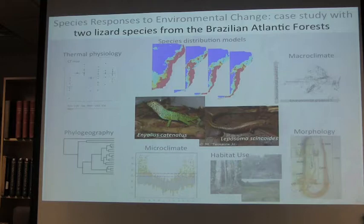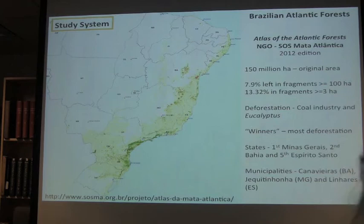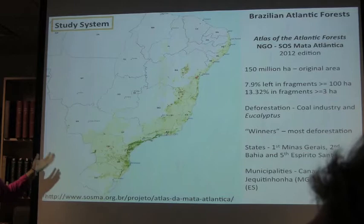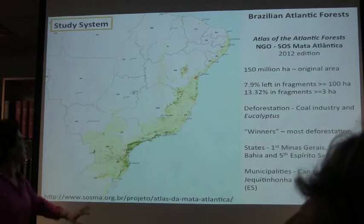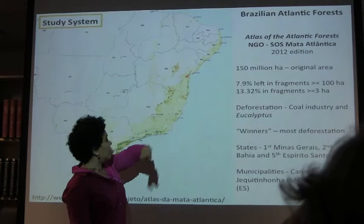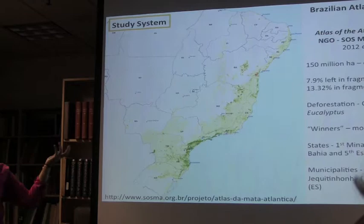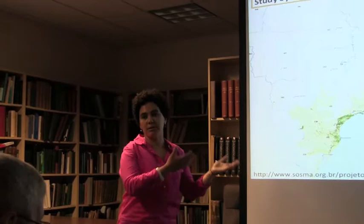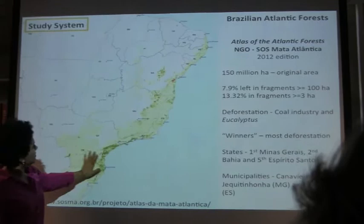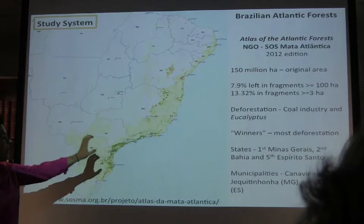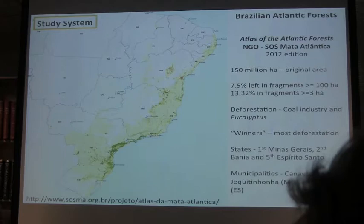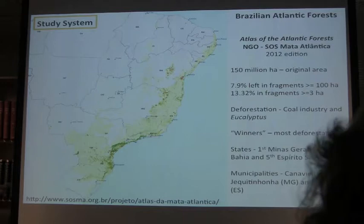Here are some depressing facts about the Atlantic forest, but let's start with the good stuff. This is South America, this is Brazil, and I want to call your attention to Bahia, Minas Gerais, Espírito Santo, and Rio — areas very important to my research in the central Atlantic forest. The Atlantic forest originally spanned 150 million hectares; today, looking only at forest patches of 100 hectares or larger, we have only 8% of the original forest left.